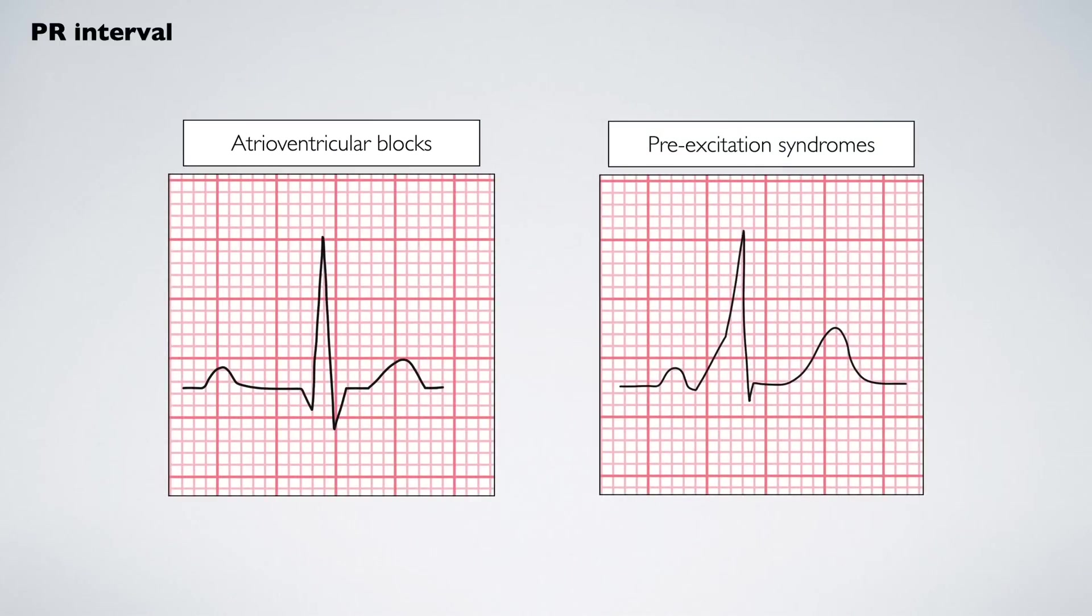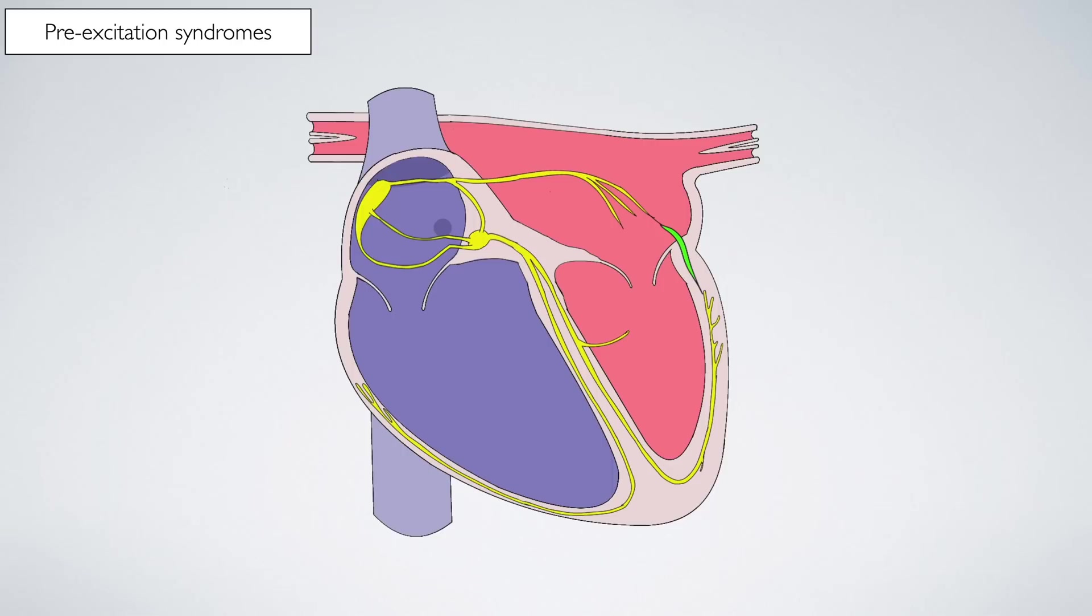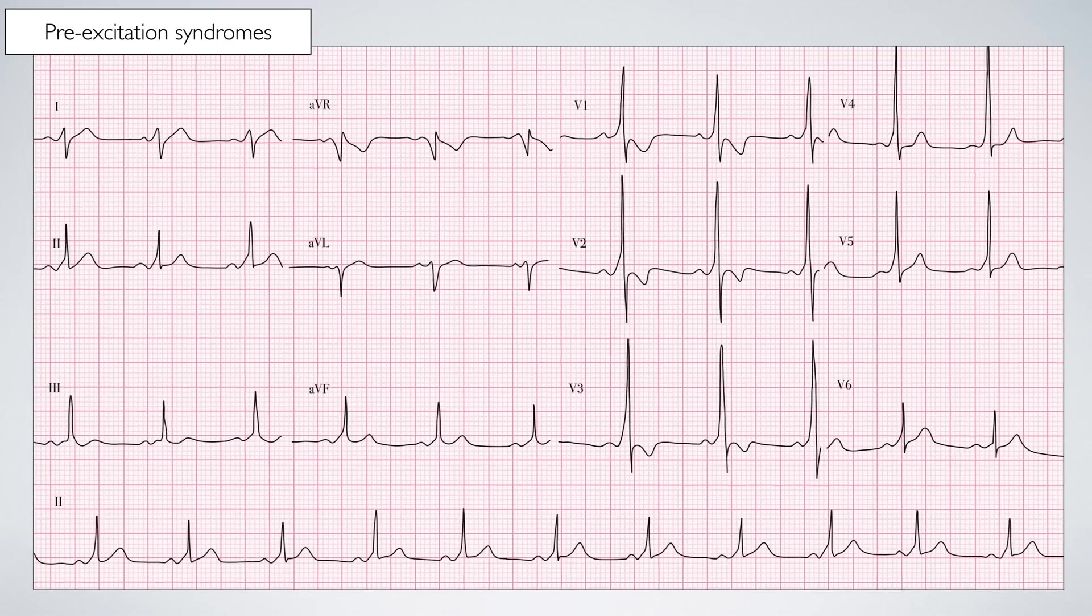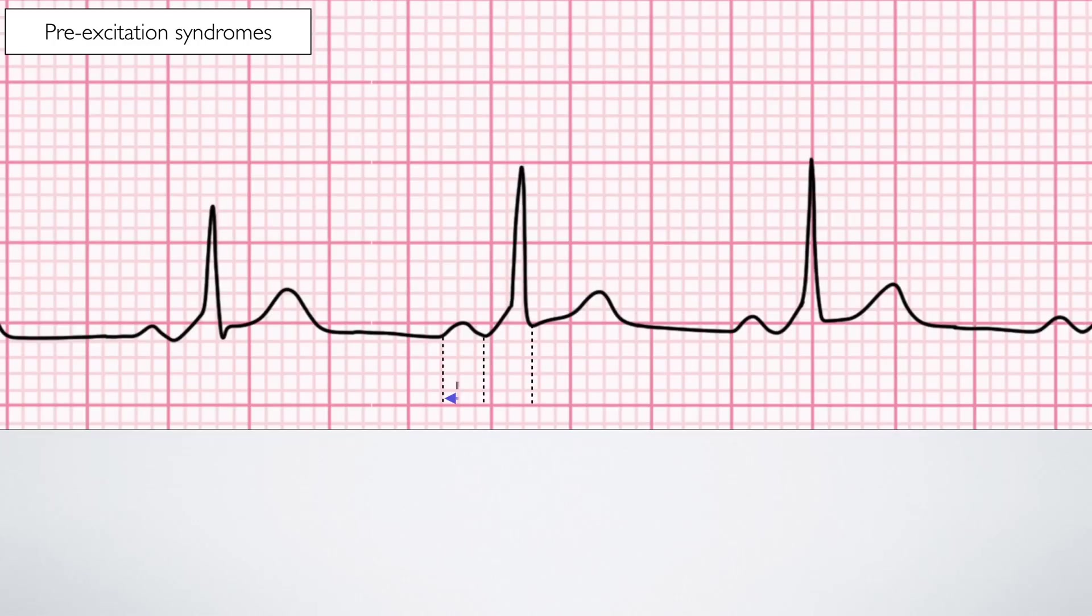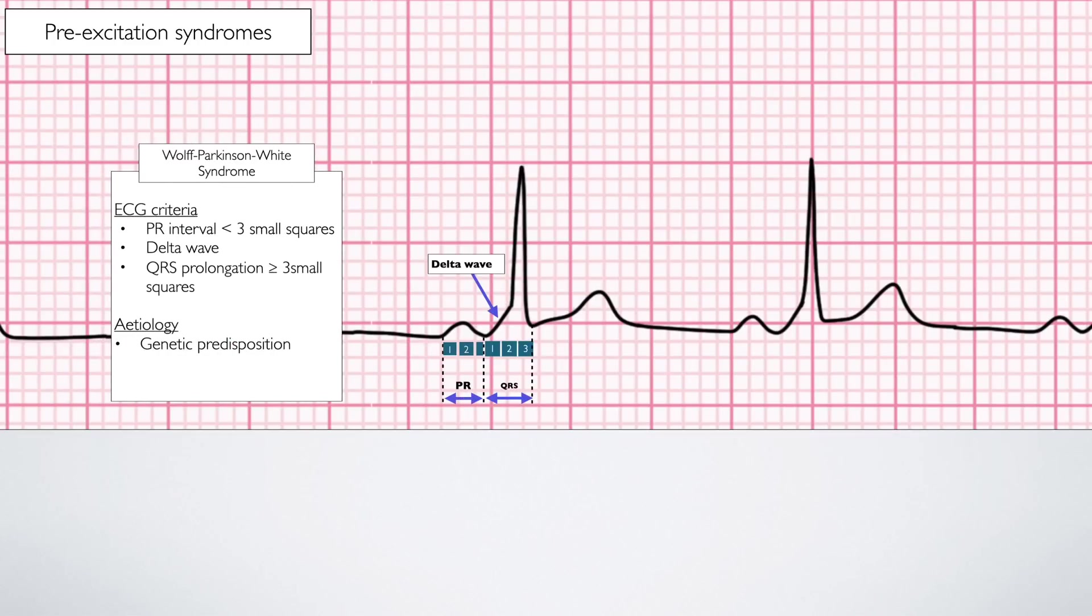A shortened P-R interval is seen in pre-excitation syndromes, where an accessory pathway connecting the atria and ventricles allows for early ventricular depolarization. This is an example of a pre-excitation syndrome. Note how the P-R interval is shortened and QRS complex is lengthened by a delta wave. This diagnosis is known as Wolff-Parkinson-White and predisposes patients to atrioventricular re-entrant tachycardia.